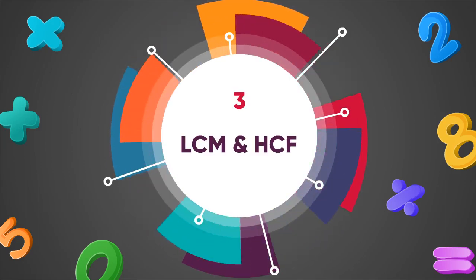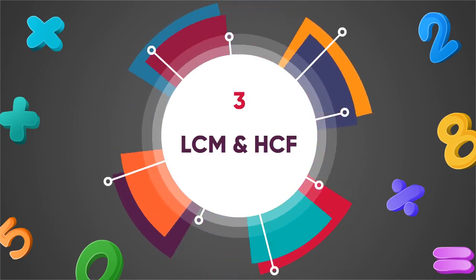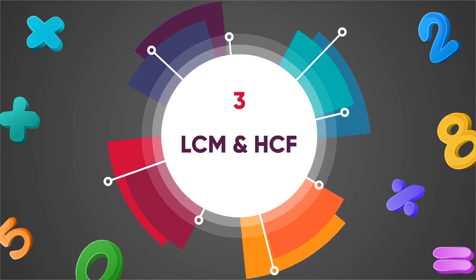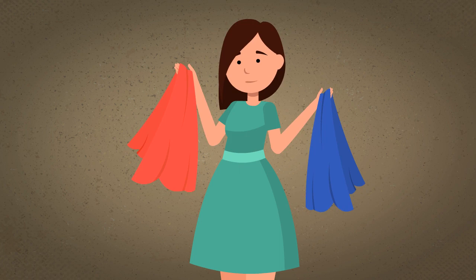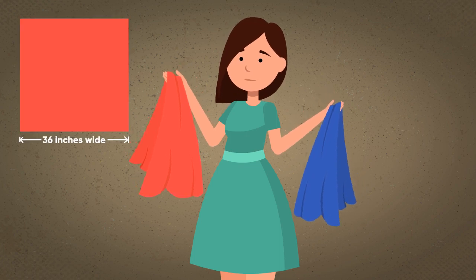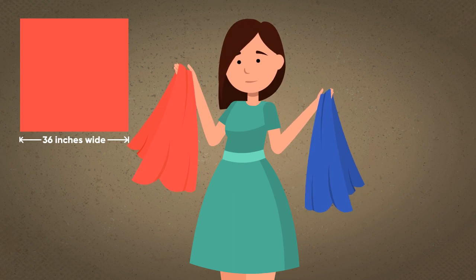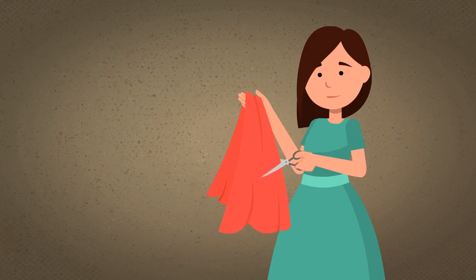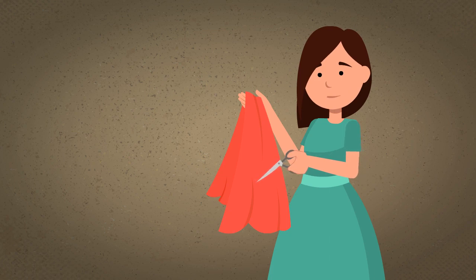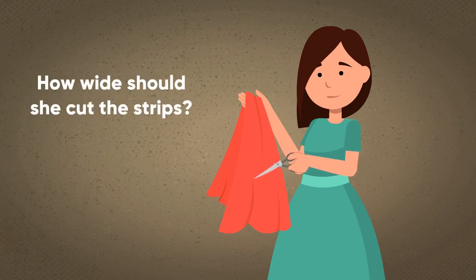Chapter 3: LCM and HCF. Priya bought a red cloth and a blue cloth to learn embroidery. One piece is 36 inches wide and the other piece is 24 inches wide. She wants to cut both pieces into strips of equal width that are as wide as possible. How wide should she cut the strips?